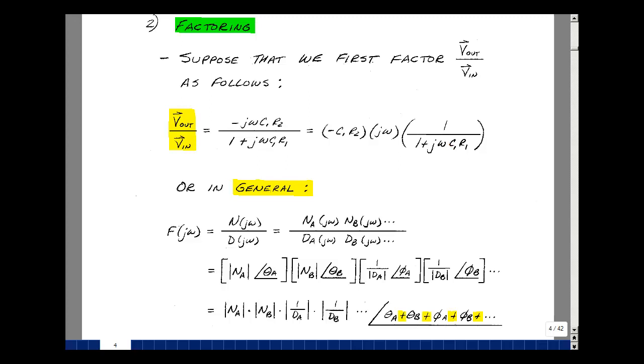Or we could talk about this in general as having a transfer function that has a numerator and denominator. If we factor that into terms, we could find the magnitude and angle of all the terms in the numerator. Let's write the denominator as the reciprocal of the magnitude of D sub A, and take the negative of the angle.